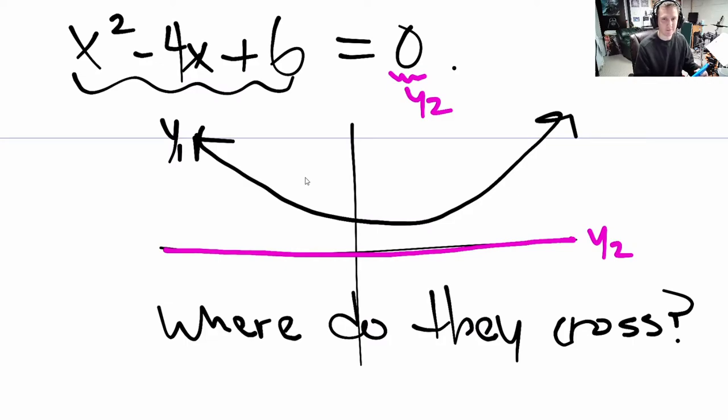They don't. So this is a strange one. It sort of stands out because there's no place where they cross. So there's literally no solutions to this equation because the graph of the left side and the graph of the right side never cross. That means that there's no solution at all.